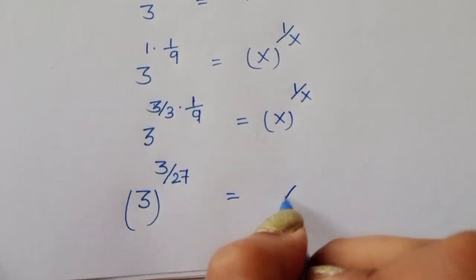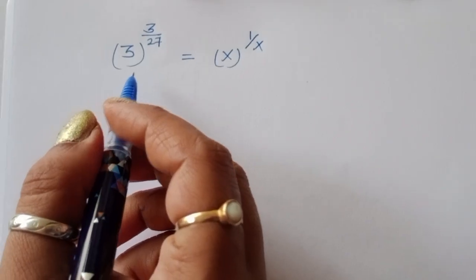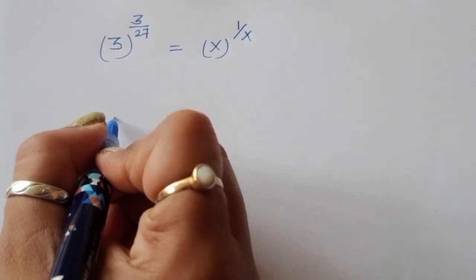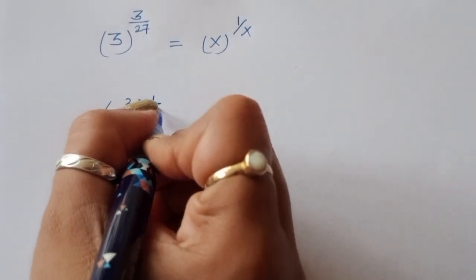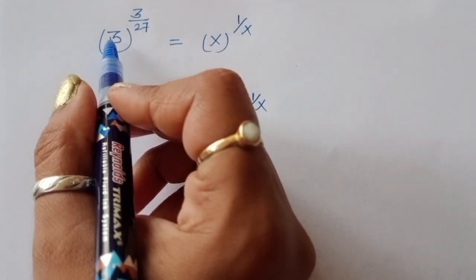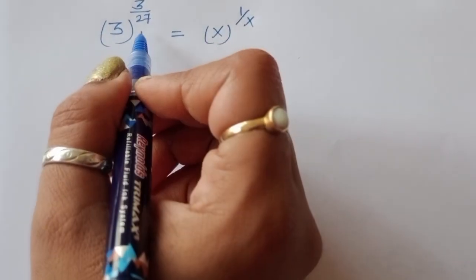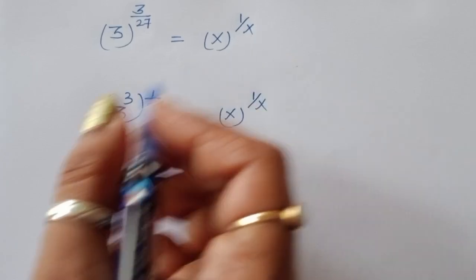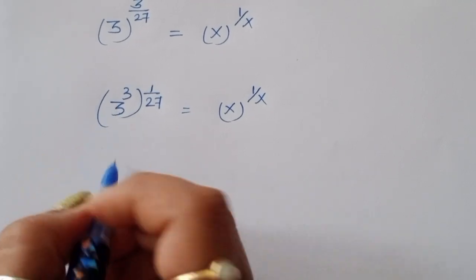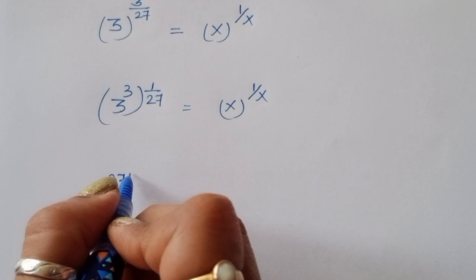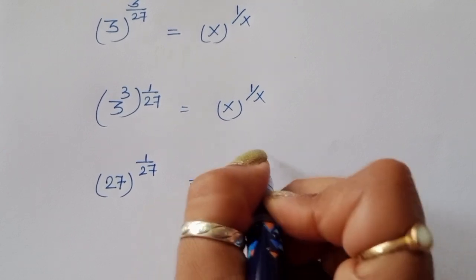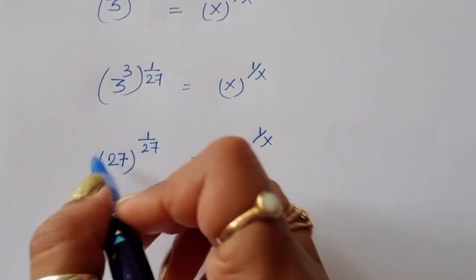Now we rewrite 3 power 1 upon 9. We can write this as 3 power 3 by 27, which equals 3 power 3 power 1 by 27. Using the formula a power m power n equals a power mn, since 3 power 3 is 27, this becomes 27 power 1 upon 27 is equal to x power 1 upon x.